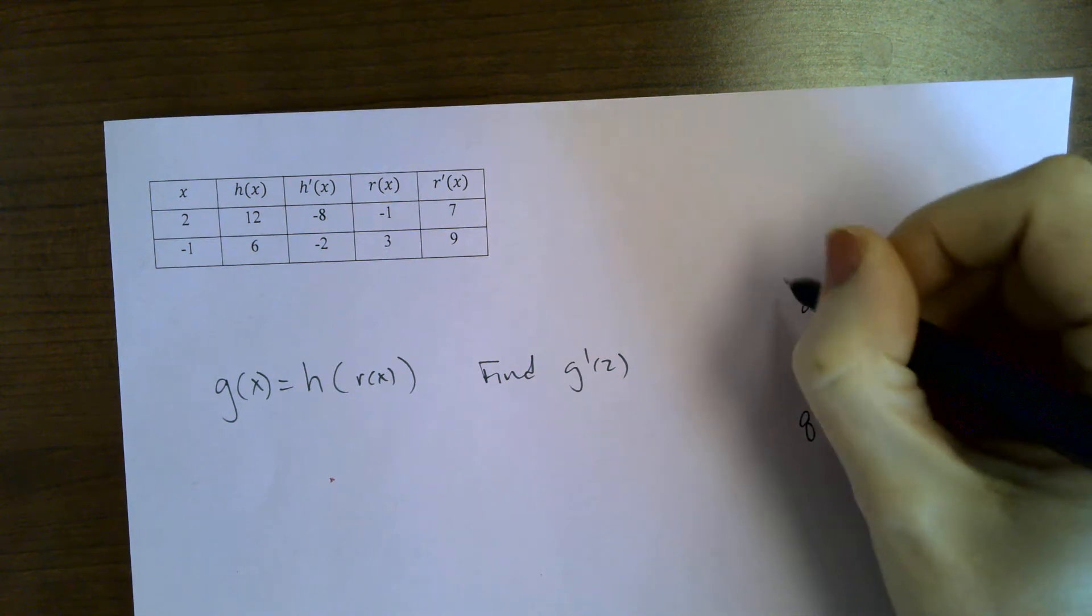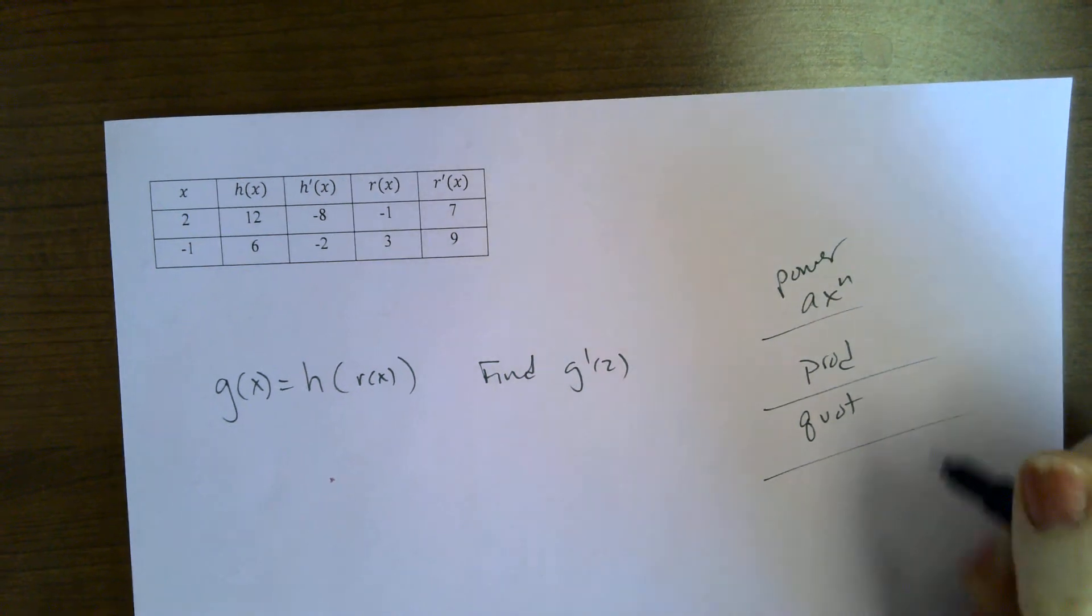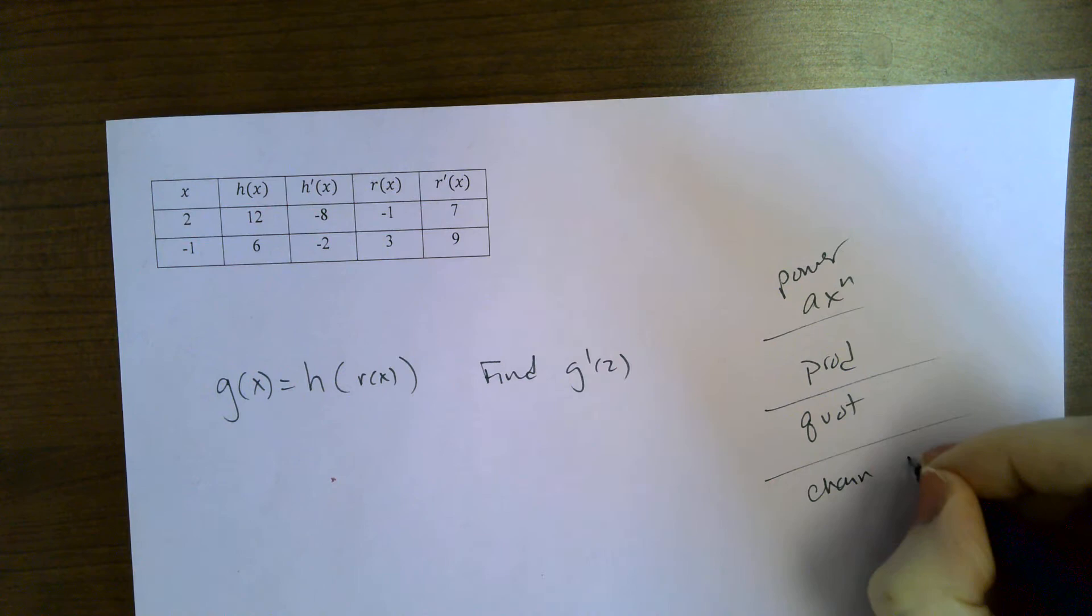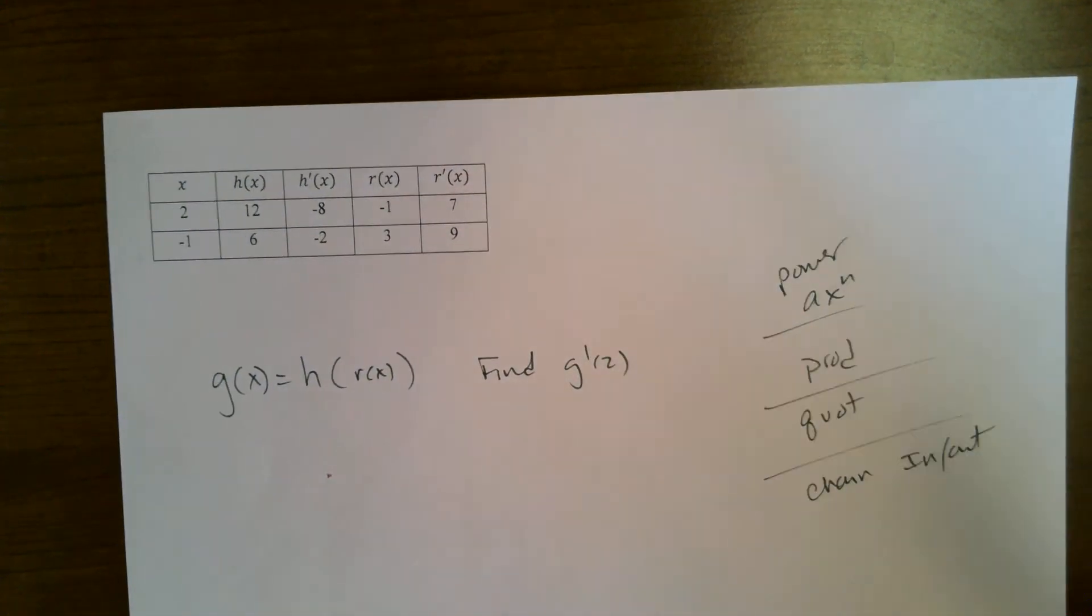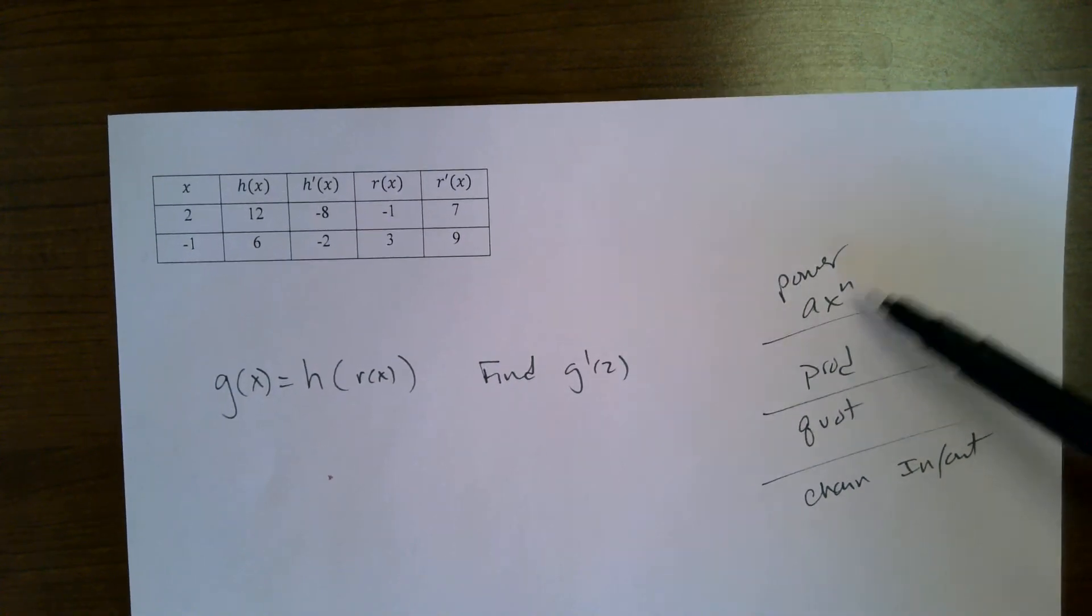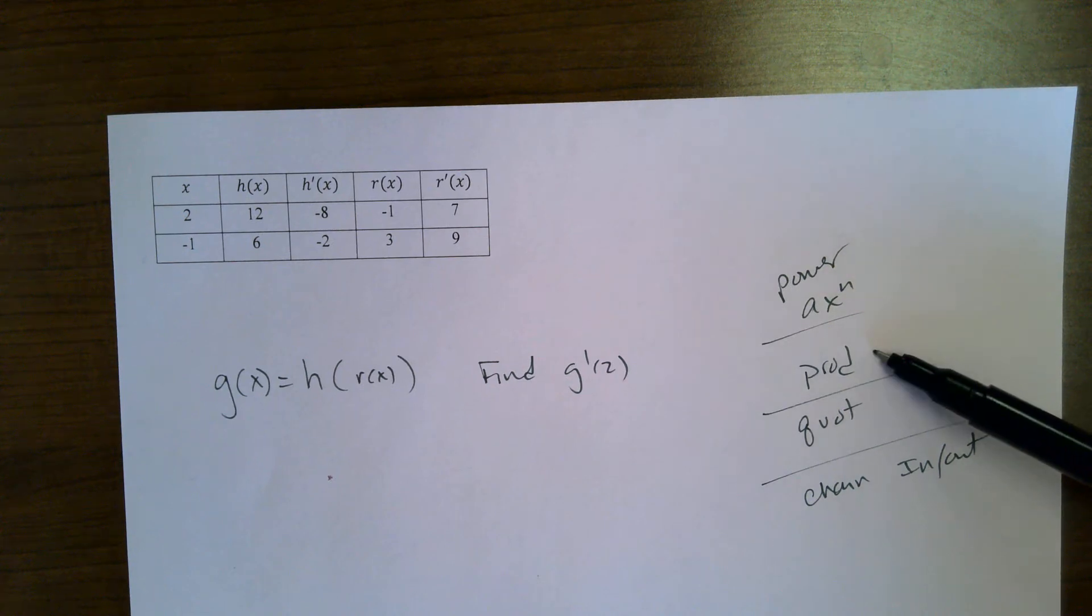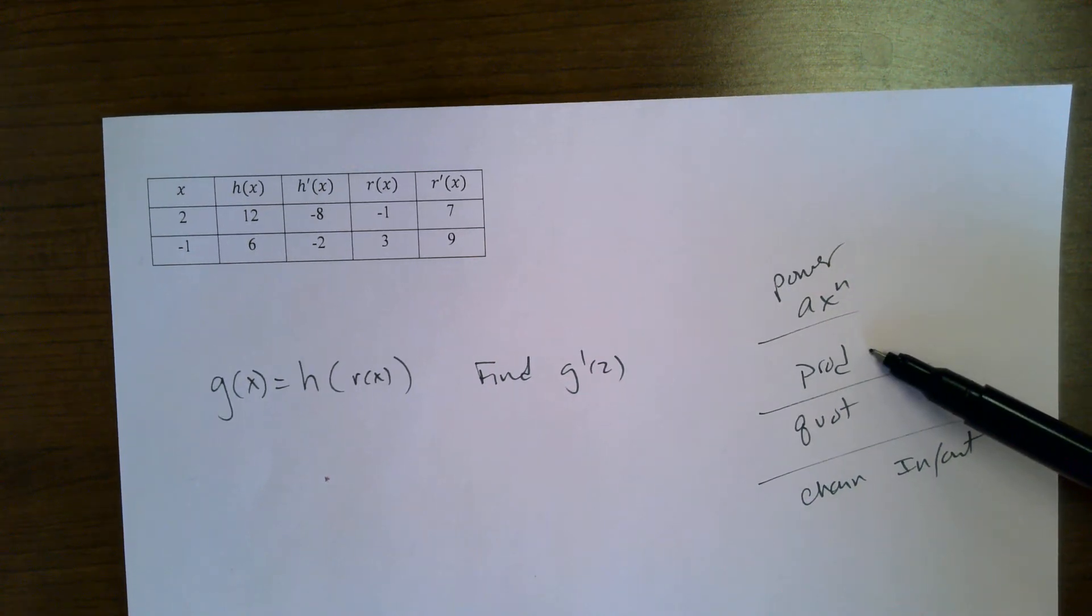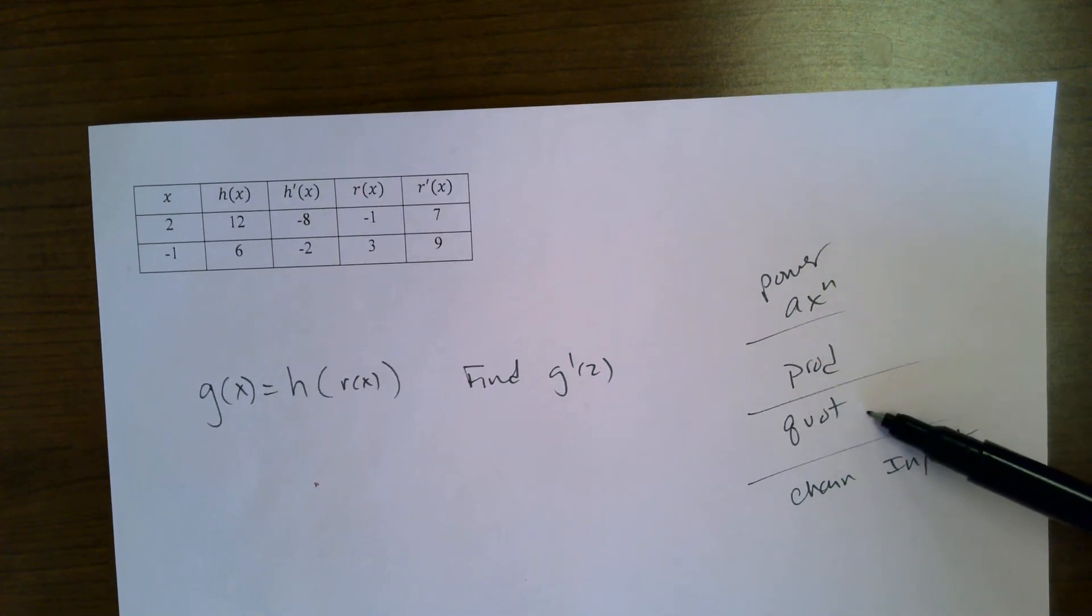Okay, so you really have to be asking yourself, am I dealing with something that looks like ax to the n, in which case it would be a simple power rule? Am I dealing with a product of two functions, or am I dealing with a quotient of two functions?